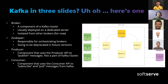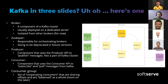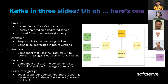A consumer group is a set of cooperating consumers. They share offsets and are balanced as a whole. Kafka tracks consumers since the moment they subscribe to a particular topic and assigns partitions to particular consumers. If one consumer is down or unresponsive, its partition is reassigned to another consumer within the same consumer group. Also, if all consumers in a group go down and come back up, they can continue consuming from exactly where they left off.